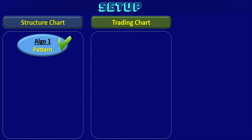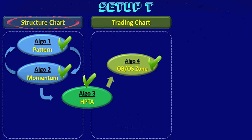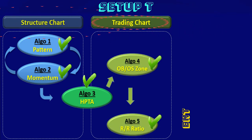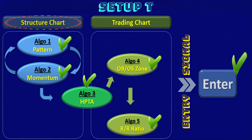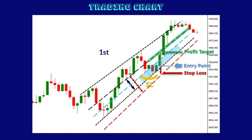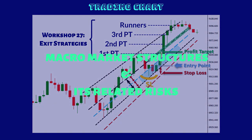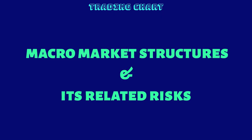When you gain more experience using the two structural and trading charts to identify the high probability trading areas under setup T, you may notice there are certain market conditions where you could gain larger profits and occasionally runners. We will discuss multiple exit strategies in the next workshop, but we'll focus in this lesson on the influence of macro market structures and its related risks.